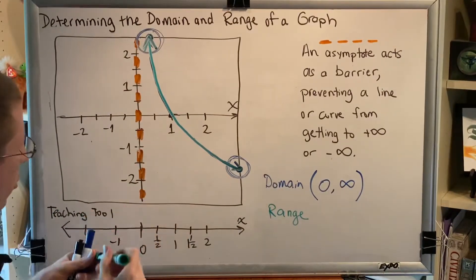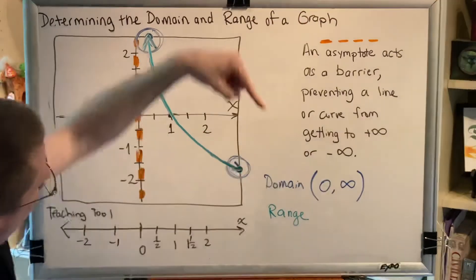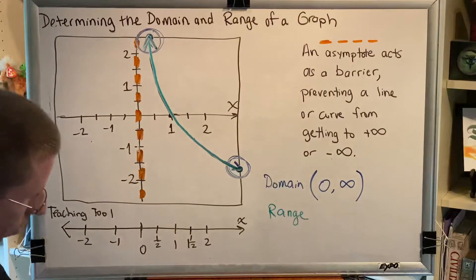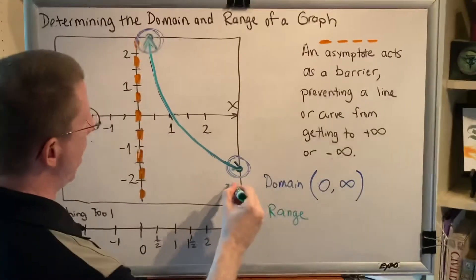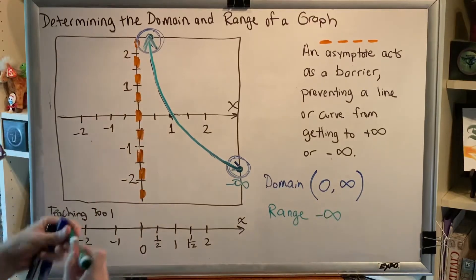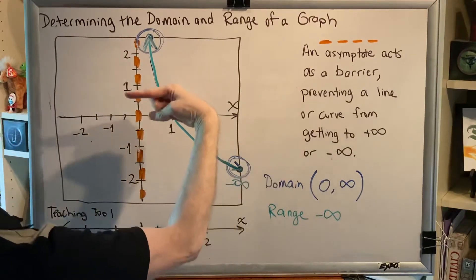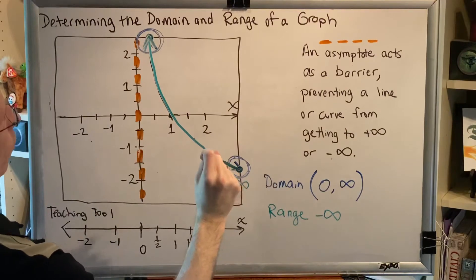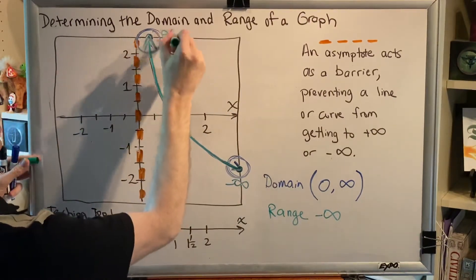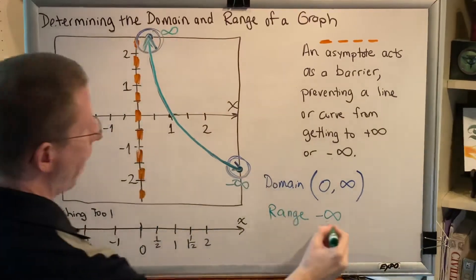What two arrows is this direction pointing? Right and down. Which one do we care about for range? Down. So this is negative infinity. This arrow is pointing up and left. Which one do we care about for range? Up. So this is representing positive infinity, and we have all the values in between.